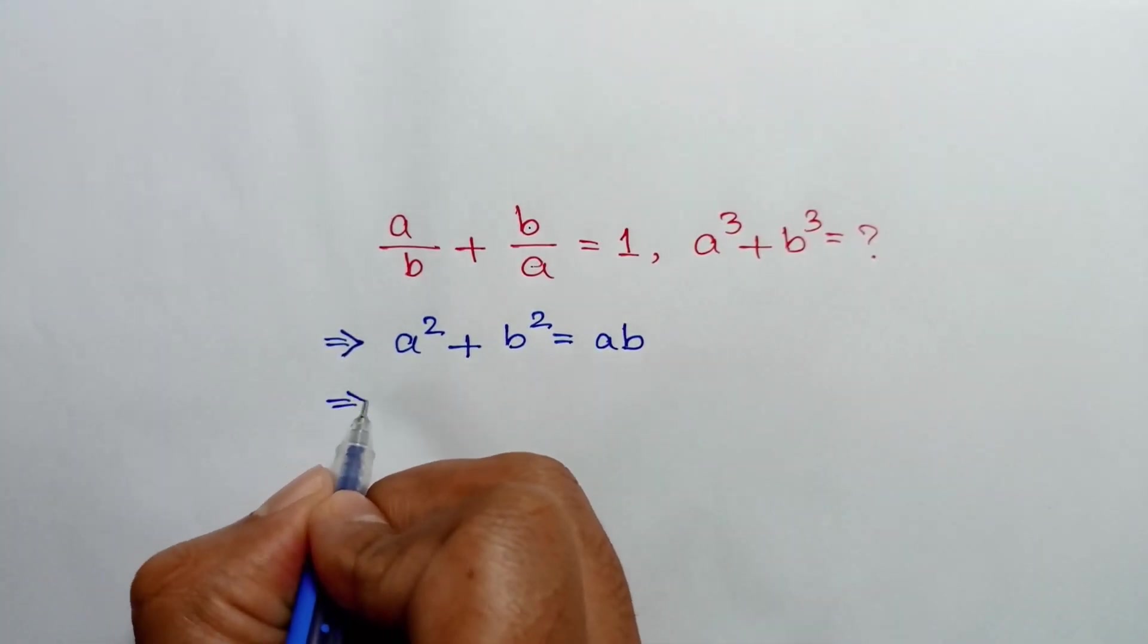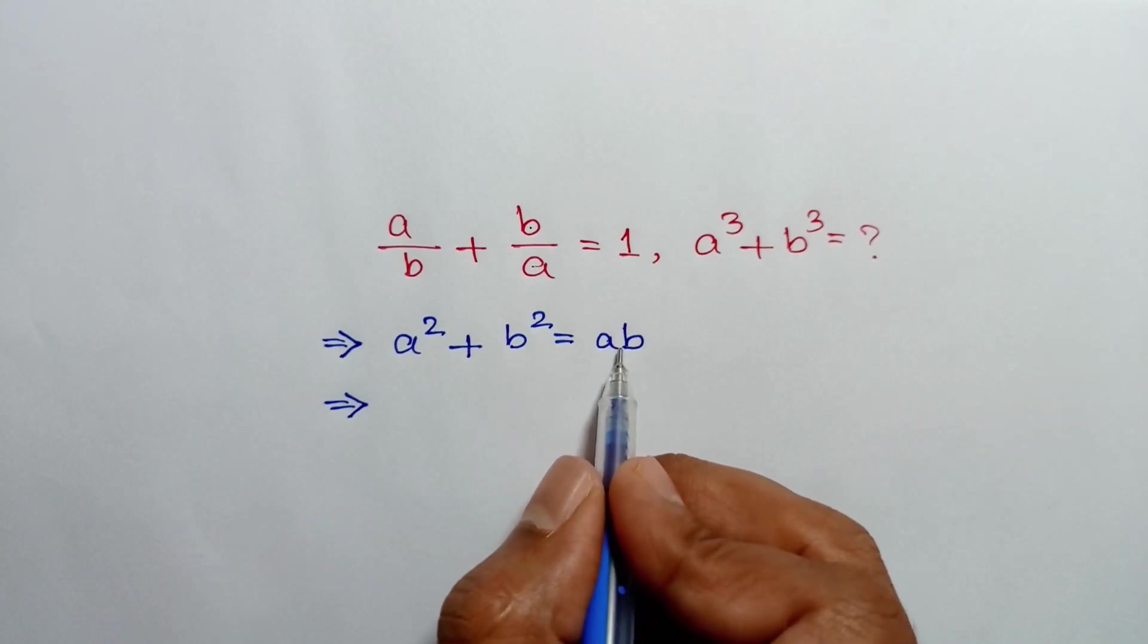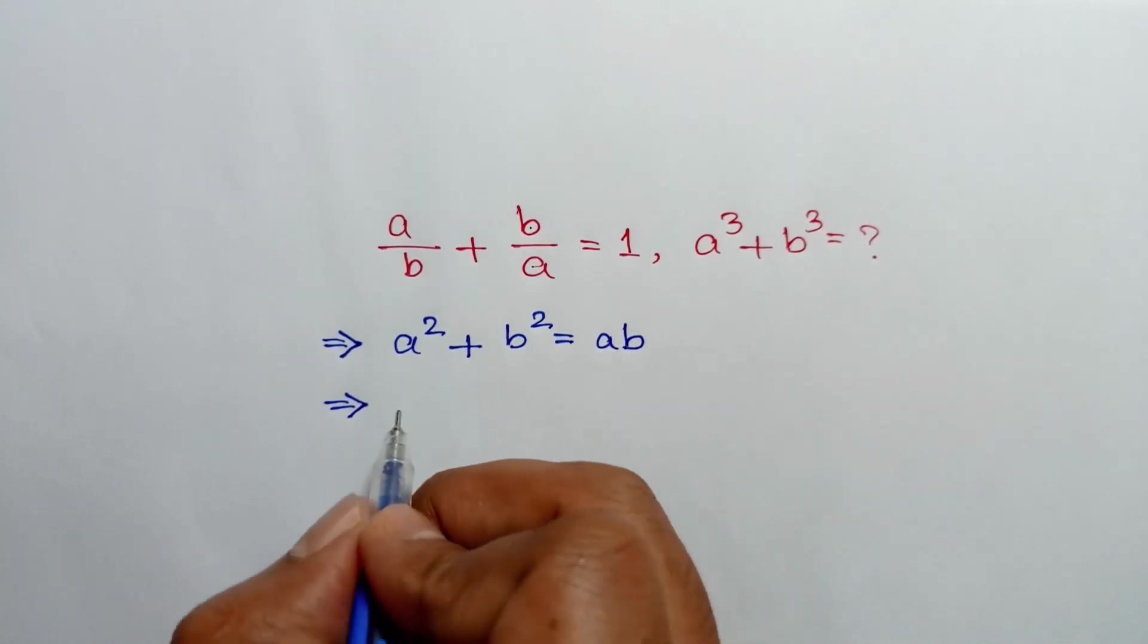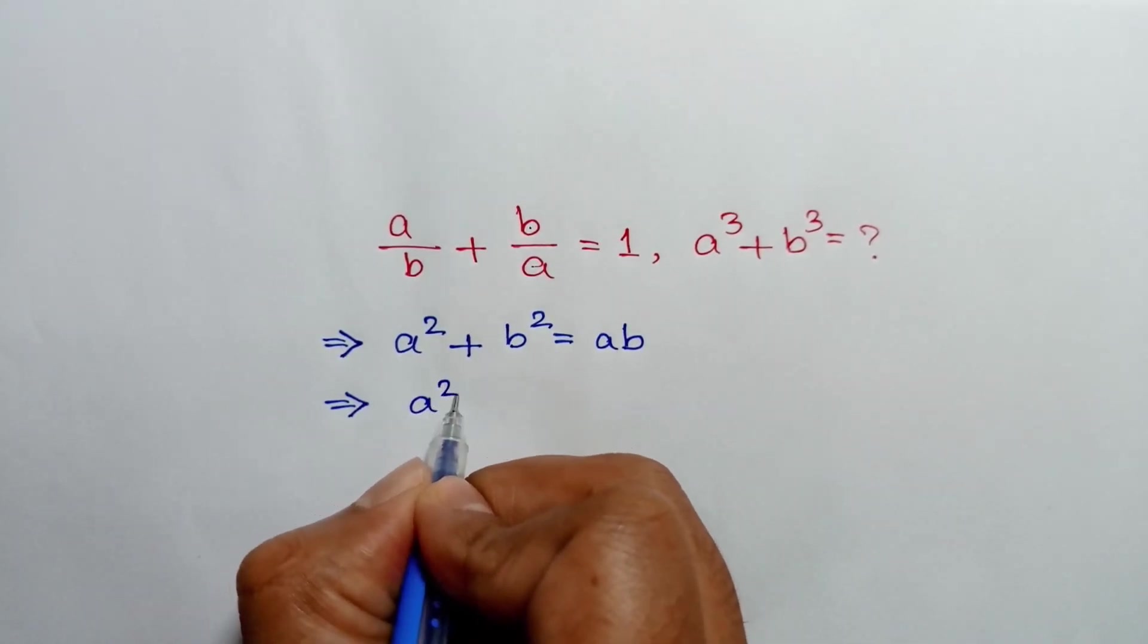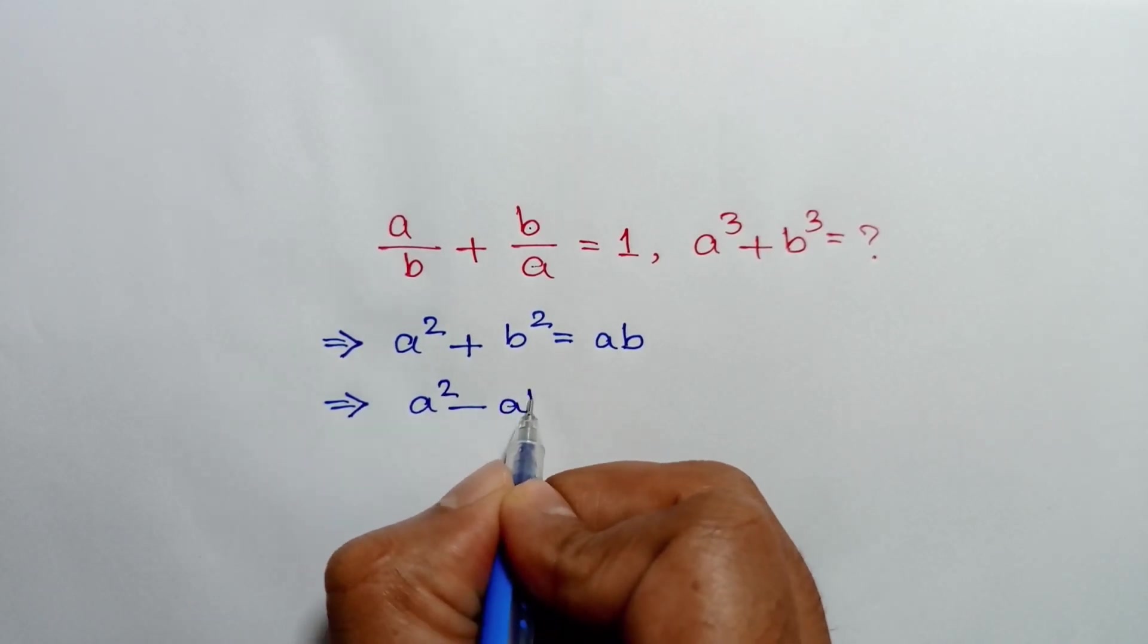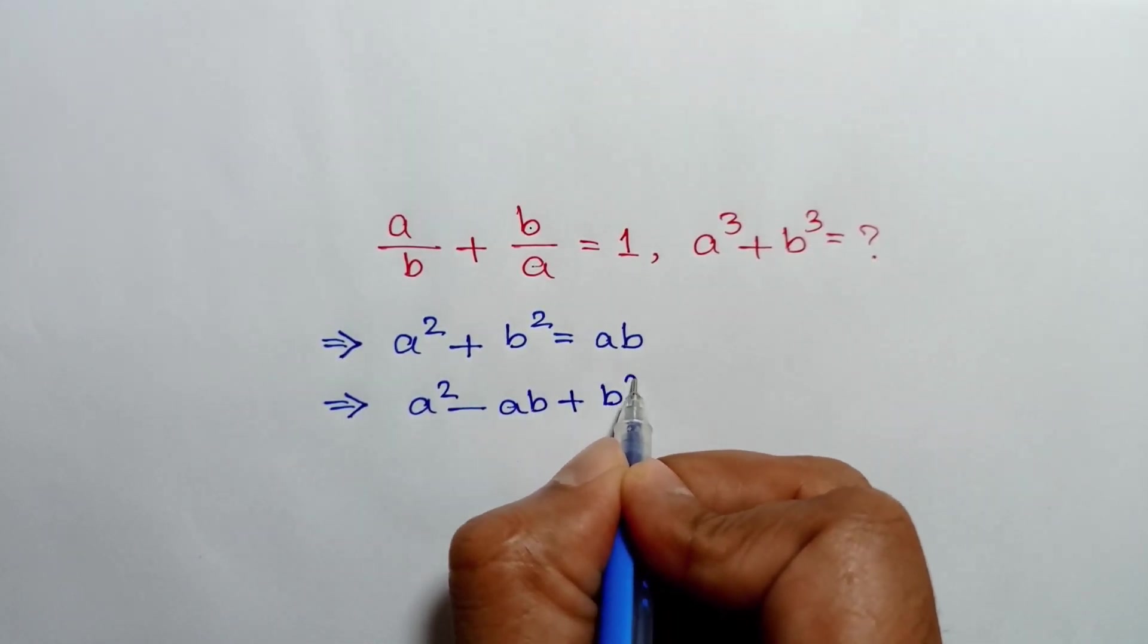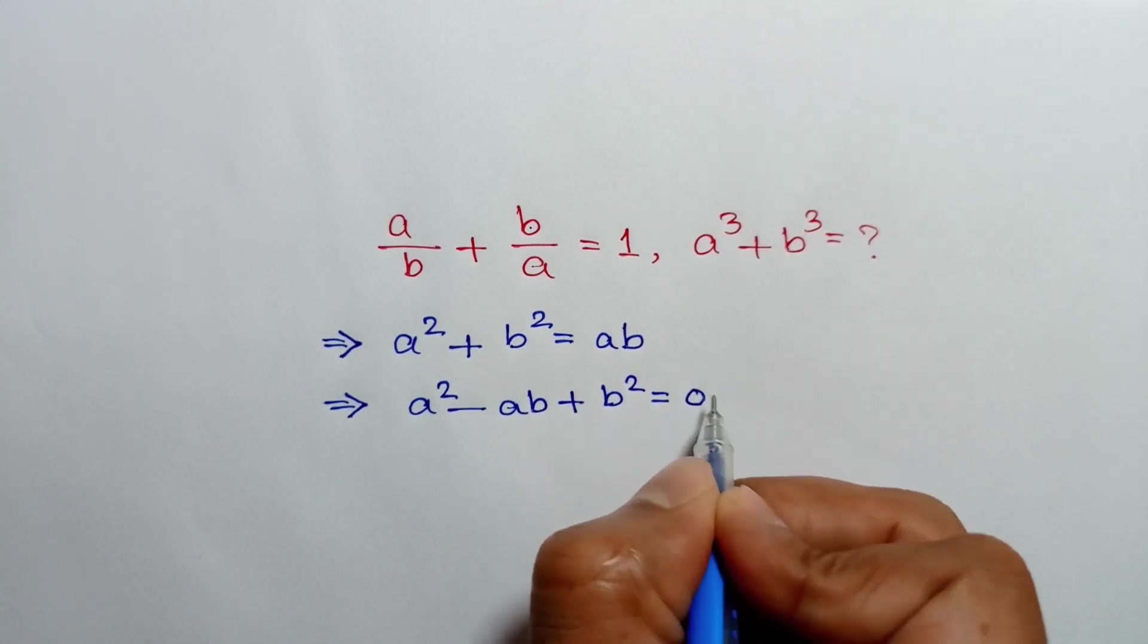Taking this ab to the left side, we can write a square minus ab plus b square is equal to zero.